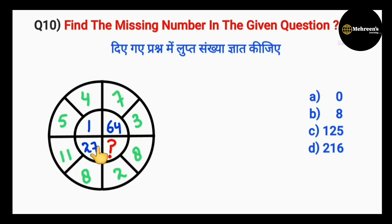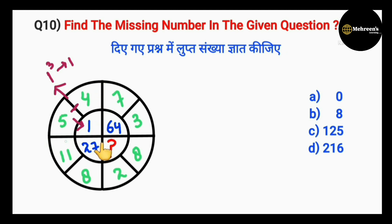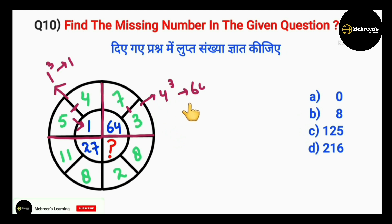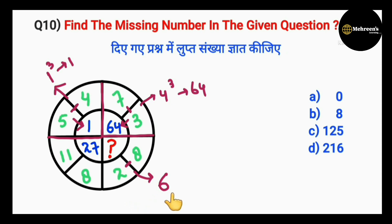Tenth question — two circles, one inside the other. Starting here: 5 minus 4 equals 1, and 1 cubed is 1, which is the inner number. Next section: 7 minus 3 equals 4, and 4 cubed equals 64, which is the related inner number. Now: 8 minus 2 equals 6, and 6 cubed equals 216. So the missing number is 216, option D is correct.